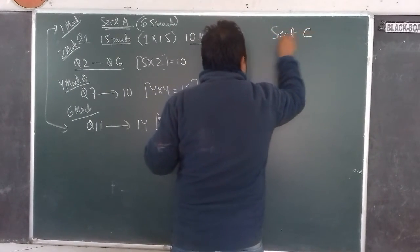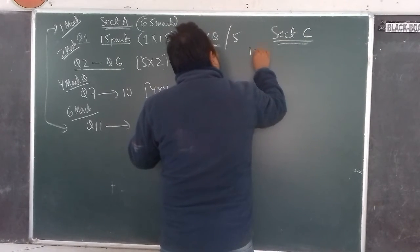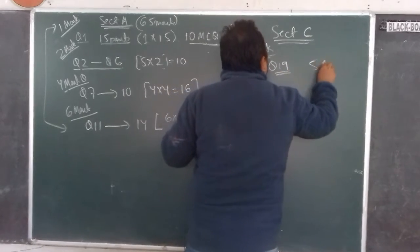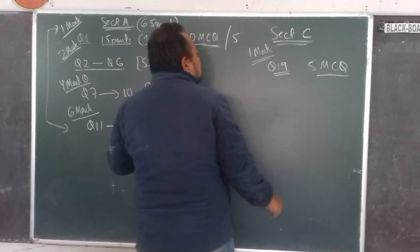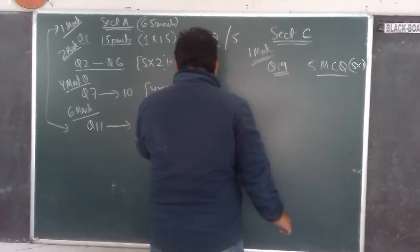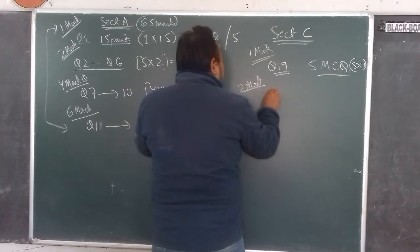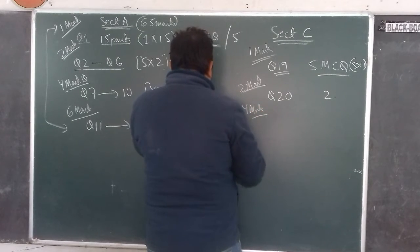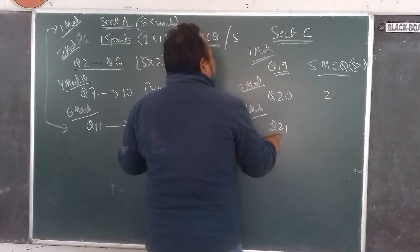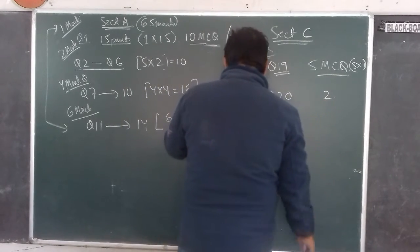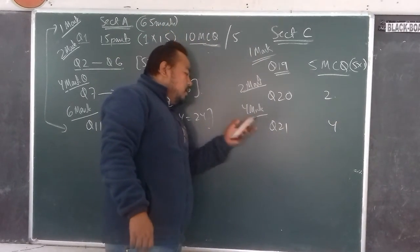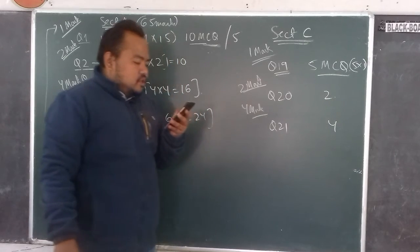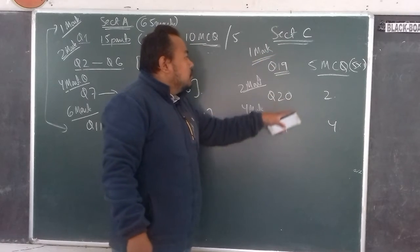I'm going to discuss Section C because Section C is easier. For Section C, question number 19 will have 5 MCQs, so 5 × 1 = 5 marks. The 2-mark question will be just one question — question number 20 — for 2 marks. For 4-mark question, question number 21 will have an internal choice — two questions given for question number 21 — so that's 4 marks, giving Section C a total of 15 marks.